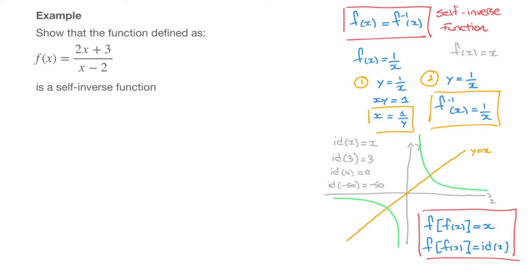Now let's go ahead and work through this example. We have to show that the function f of x, which equals 2x plus 3 over x minus 2, is a self-inverse function. There are a couple of ways to do that. The first is to actually find this function's inverse, and if we find that it's equal to the function we started off with, then it's a self-inverse function. I'll start by finding this function's inverse in two steps.